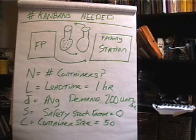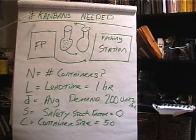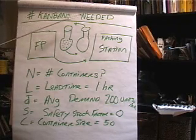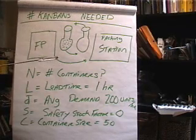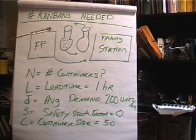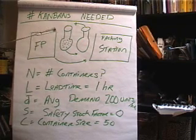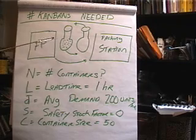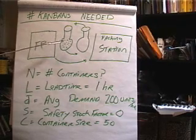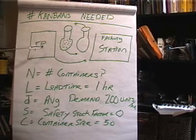In this video I'd like to describe how to calculate the number of Kanbans that would be needed in a manufacturing process. Kanbans can be represented by cards or spaces on the floor in an assembly line. Or in this example, the Kanbans themselves are containers that are moving back and forth between two processes.